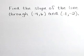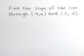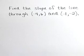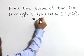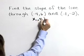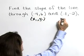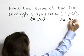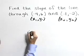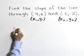Find the slope of the line. Here we have a line through negative 4, 6, and negative 1, negative 2. Let's identify these points as x1, y1, and x2, y2, and use the formula for the slope of the line.